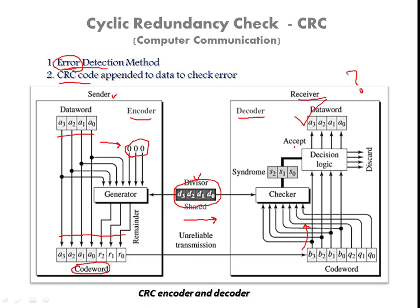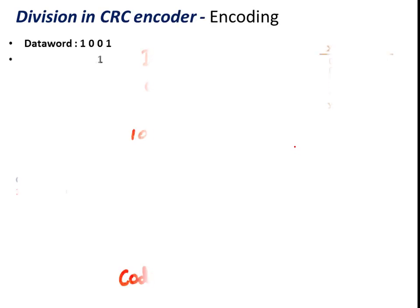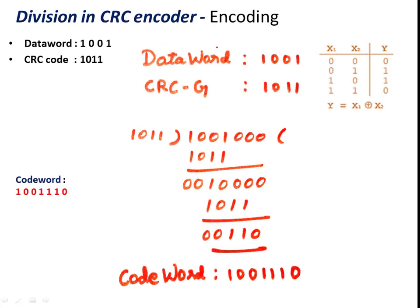We will now see the example of encoding and decoding. This is the division we perform at the sender side — the encoding process. The data word we want to send is 1001, and let us assume the CRC code is 1011. The CRC code here is 4 bits, so we append 3 zeros along with the data word. In general, if we have n bits of CRC, we append n minus 1 zeros to the data.